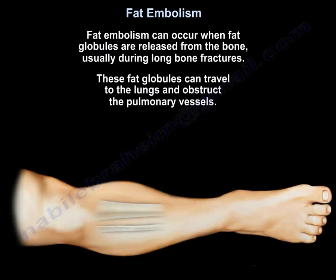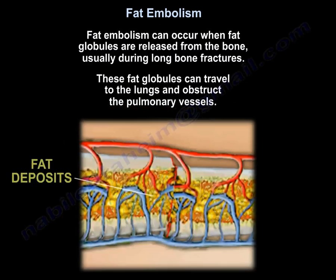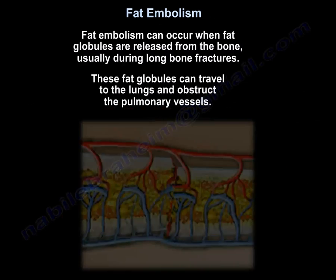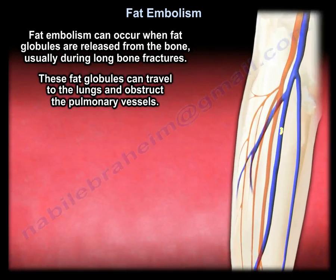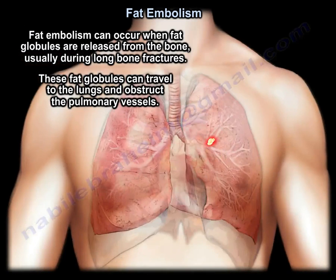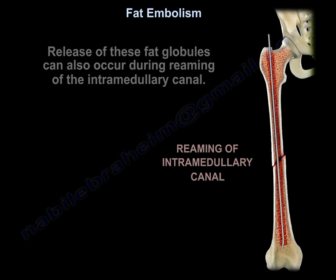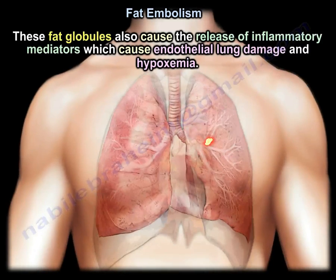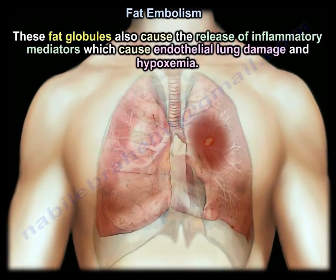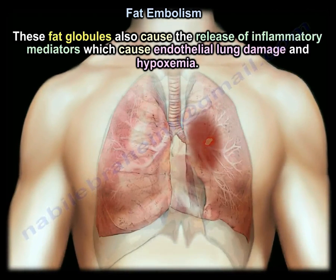Fat embolism can occur when fat globules are released from the bone, usually during long bone fracture. These fat globules can travel to the lung and obstruct the pulmonary vessels. It can also occur during the reaming of the intramedullary canal. These fat globules also cause the release of inflammatory mediators, which cause endothelial lung damage and hypoxemia.